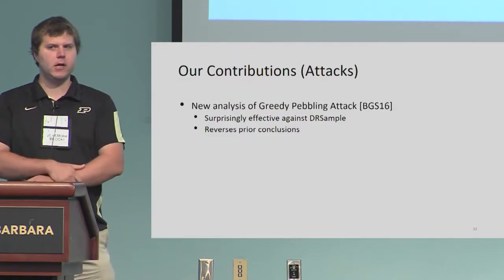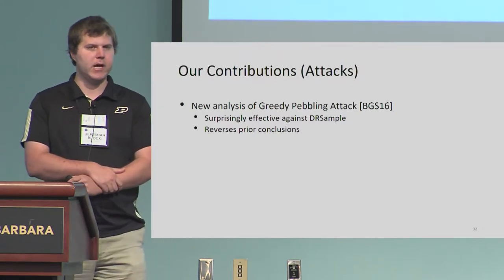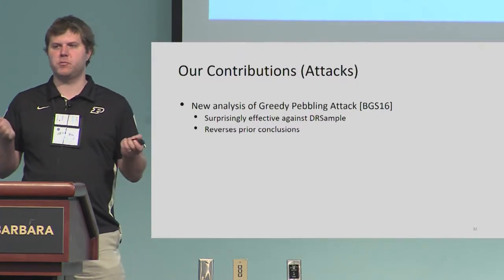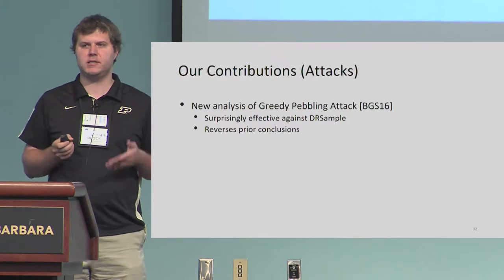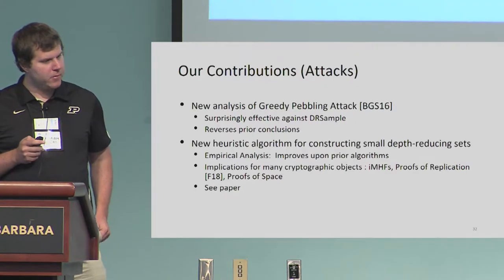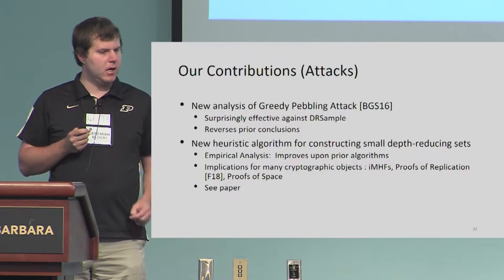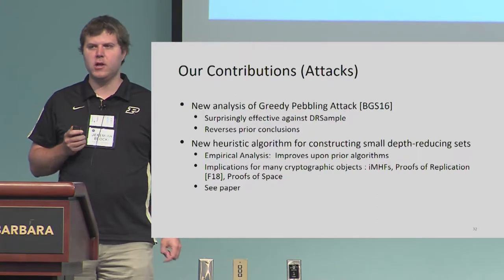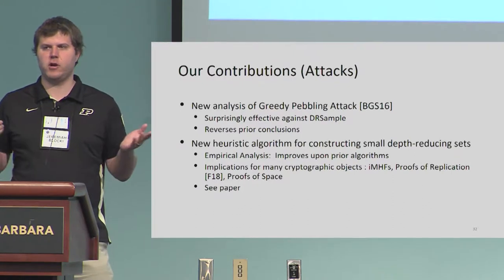Now I can tell you about our contribution. We present a new analysis of the greedy pebbling attack and show that it's surprisingly effective against DR sample — in fact, it reverses prior conclusions. Argon2i now provides stronger resistance to known pebbling attacks than DR sample, at least for practical parameter regimes. We also give a new heuristic algorithm for constructing small depth-reducing sets, which significantly improves on prior algorithms in all of our empirical analysis and potentially has implications for many other cryptographic objects where depth-robust graphs are used, such as proofs of replication, proofs of space, and memory-hard functions.